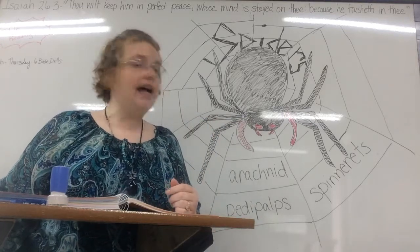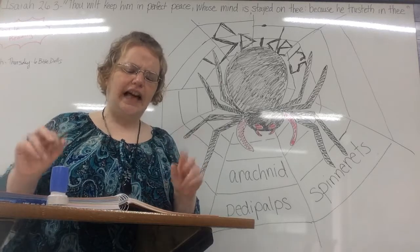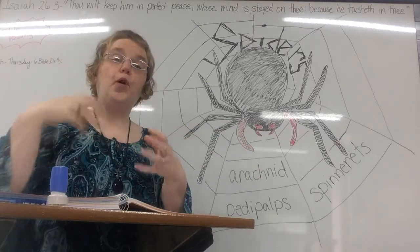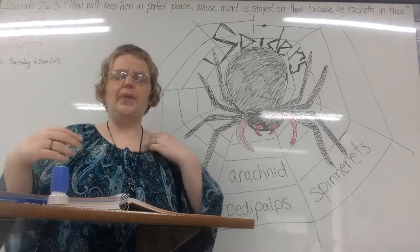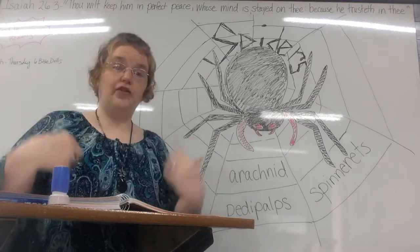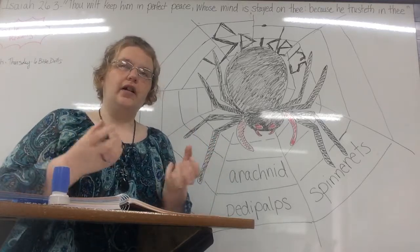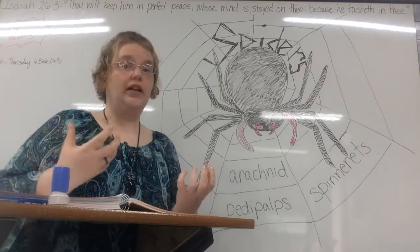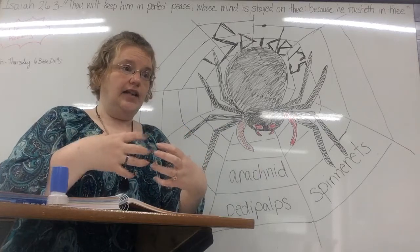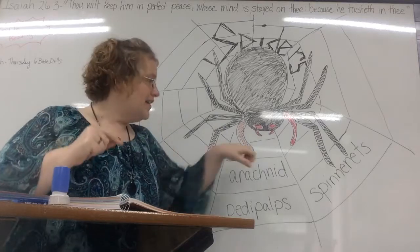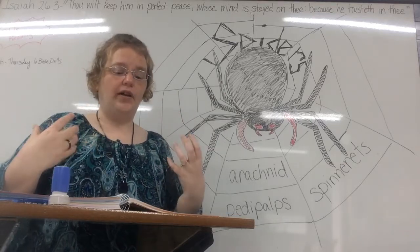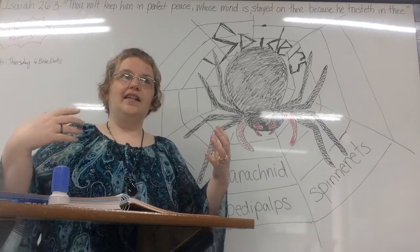A spider has four pairs of legs — a pair means two — so it has a total of eight legs. It does not have antennae, but it does have two leg-like parts called pedipalps on its head. A spider uses its pedipalps to hold its prey while it injects venom or poison with its fangs. All spiders have some type of poison, which they use to paralyze whatever creature they're eating so it stops moving.